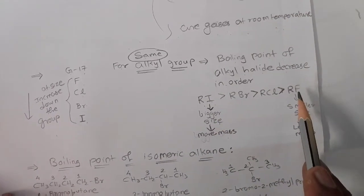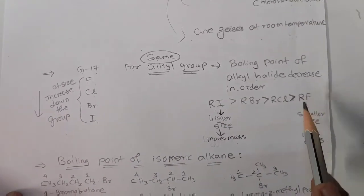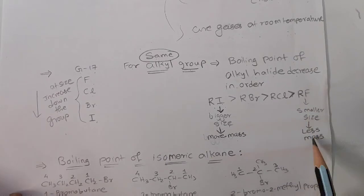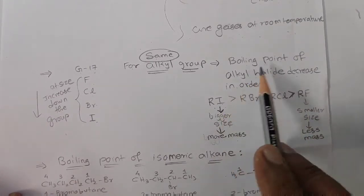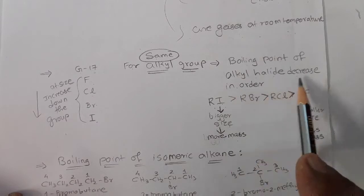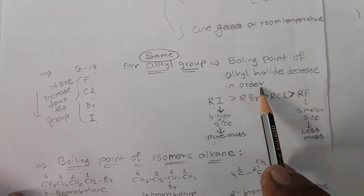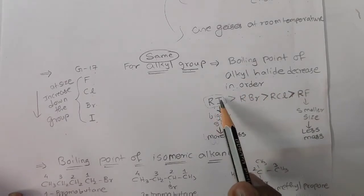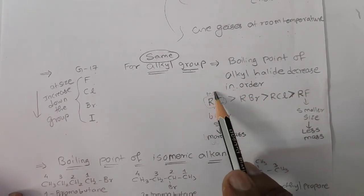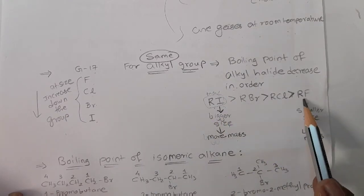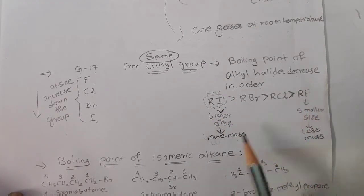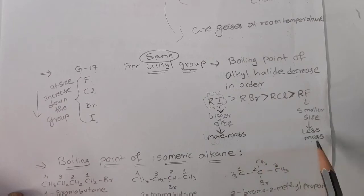Fluorine is the smallest atom and has the least mass, so alkyl fluoride has the lowest boiling point. The order of boiling point of alkyl halides decreases accordingly: maximum boiling point for alkyl iodide, and least for alkyl fluoride. This is solely due to the size and mass of the halogen atom.